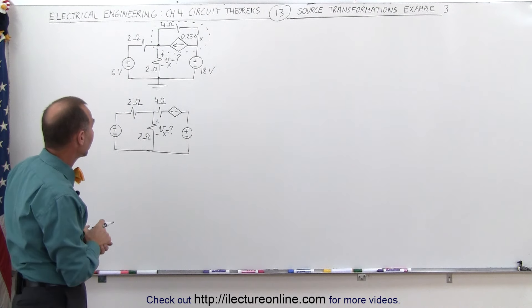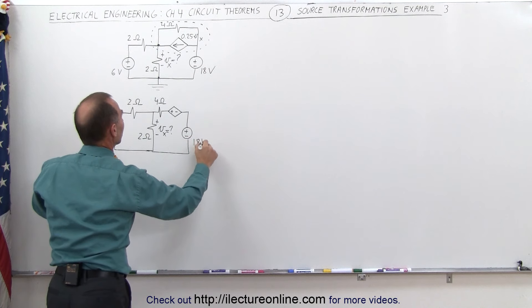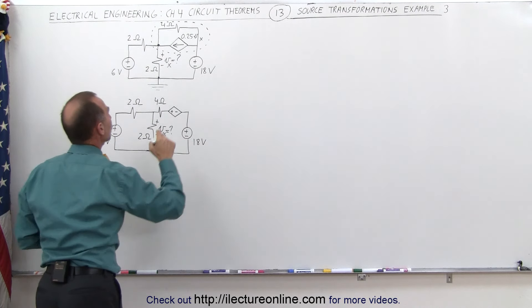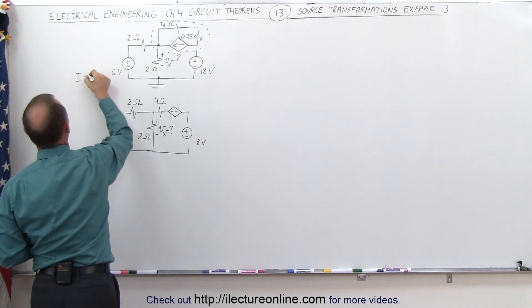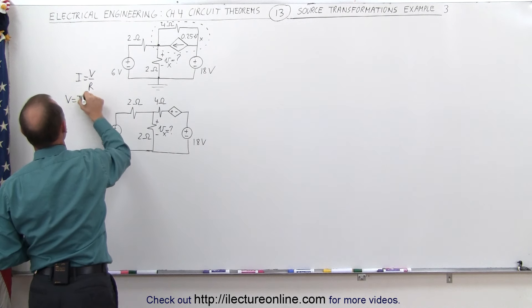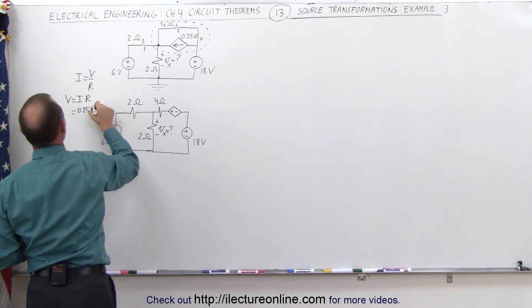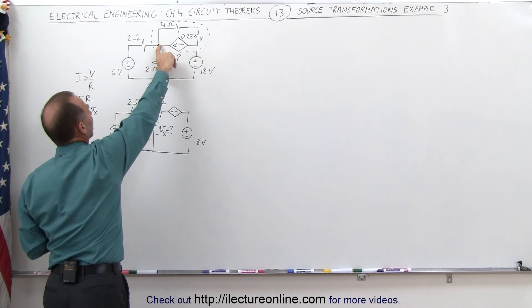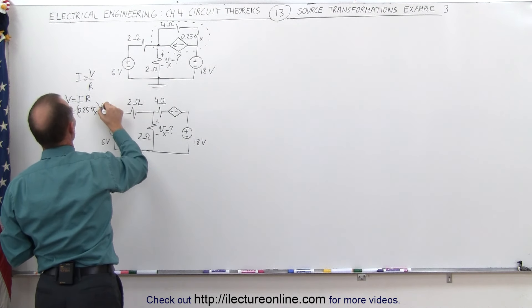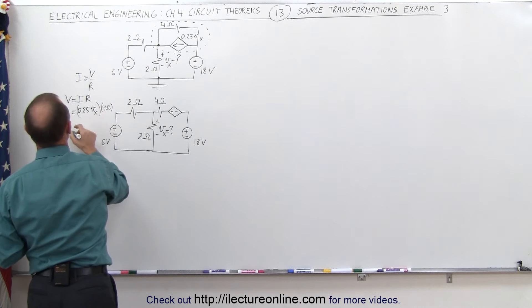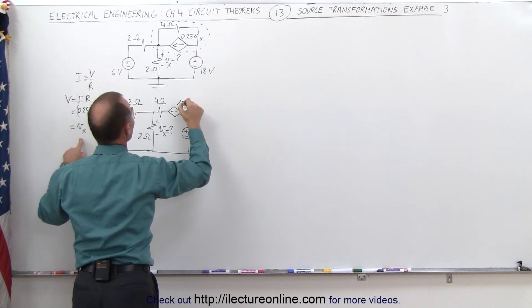It's changed quite a bit in form. This is 18 volts, this is 6 volts. How do we change from a current source to a voltage source? Ohm's law says I = V/R, which means V = I × R. In this case, the current was 0.25 times the voltage across this gap, V_X. We multiply by 4 ohms: 4 × 0.25 = 1, so the dependent voltage becomes V_X — the same as the voltage across that gap.